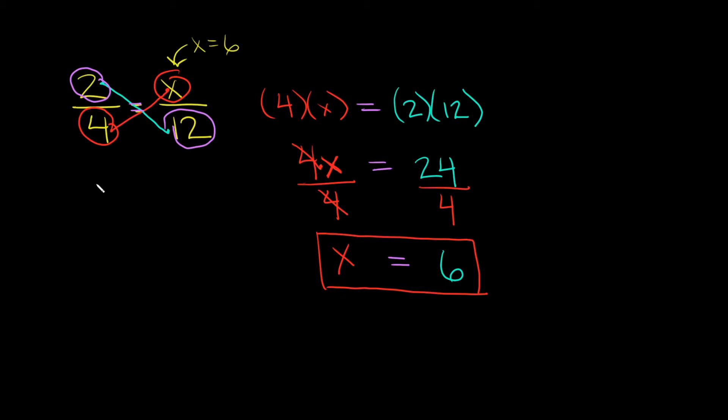We can go back to the original problem and confirm: 2 over 4 is equal to 6 over 12.